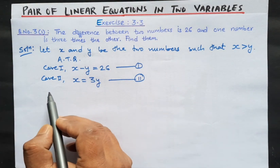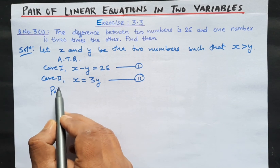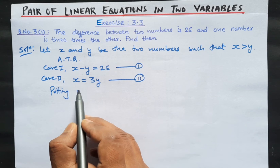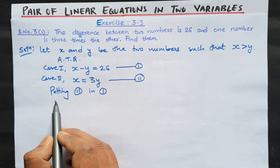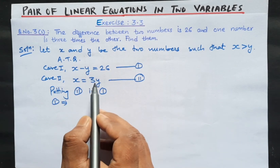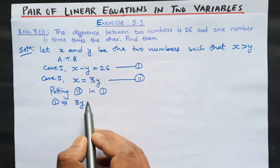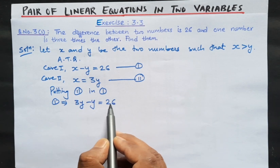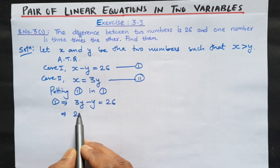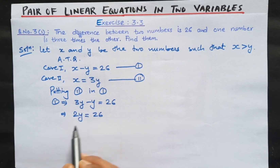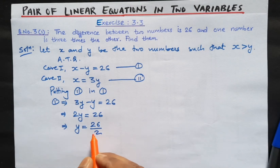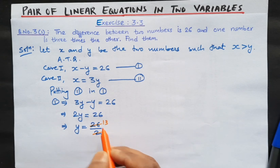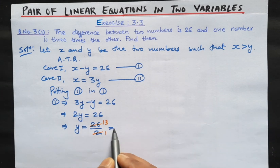By substitution method, putting equation 2 into equation 1: x is equal to 3y, so 3y minus y equals 26. Here we have 3y minus y is 2y equal to 26. So from here, y equals 26 divided by 2, which gives us y equal to 13.